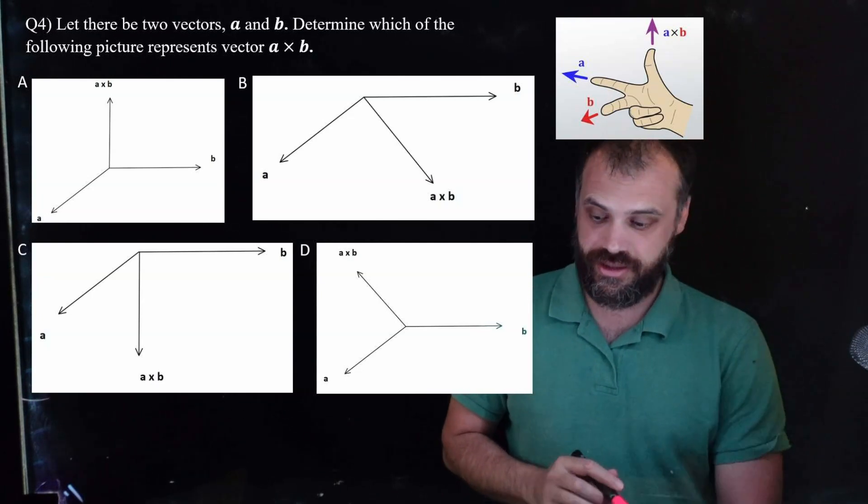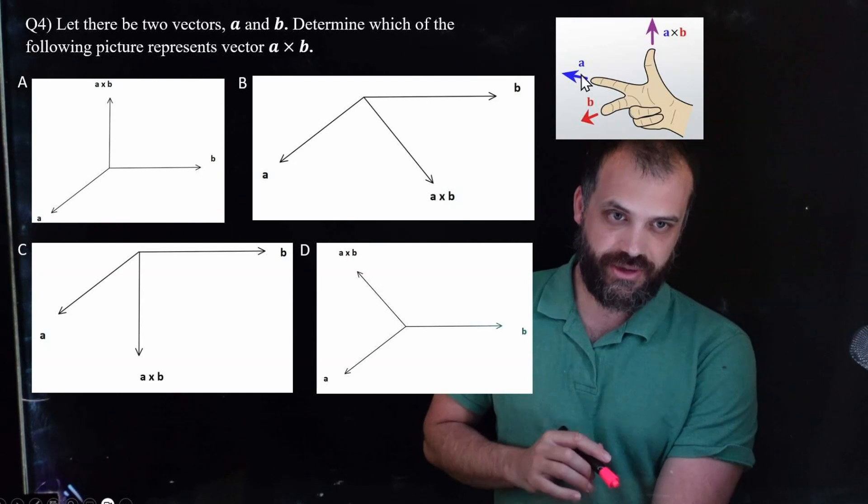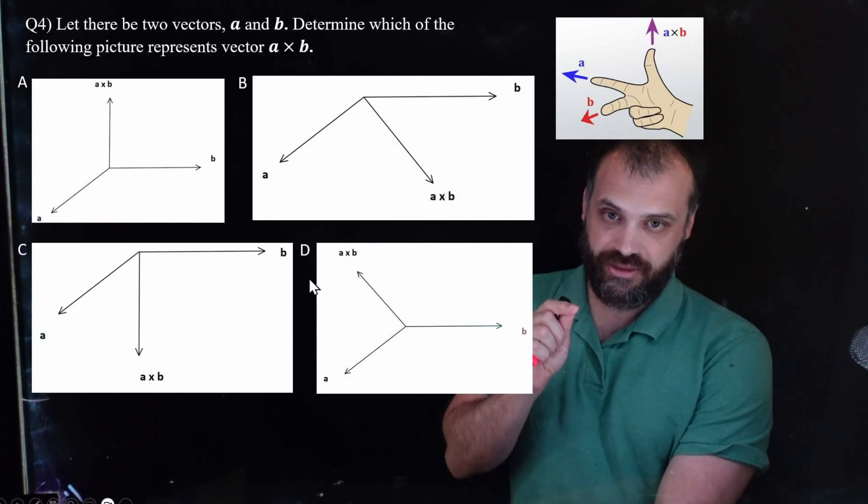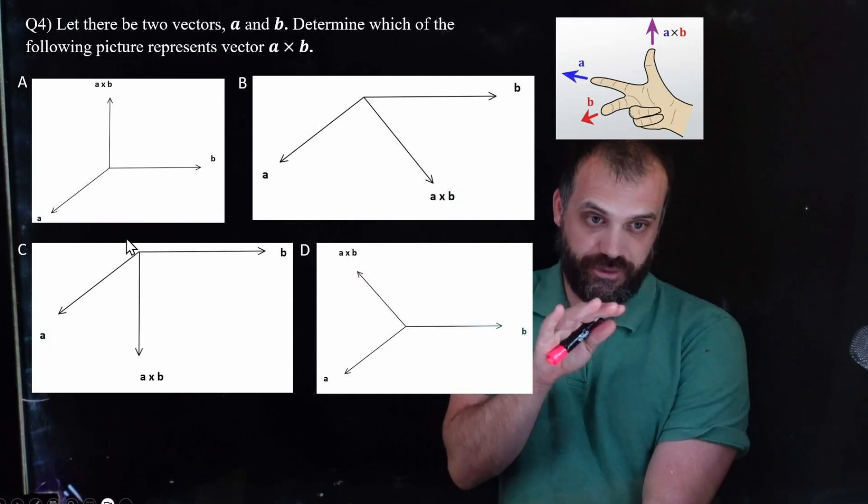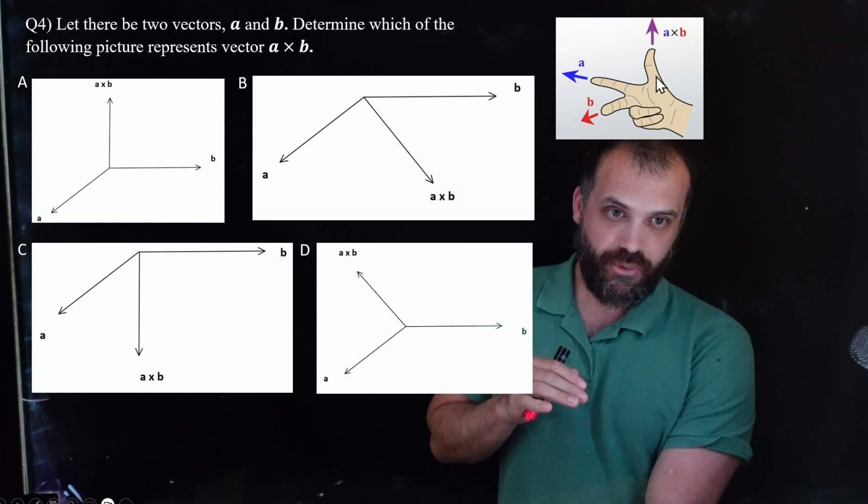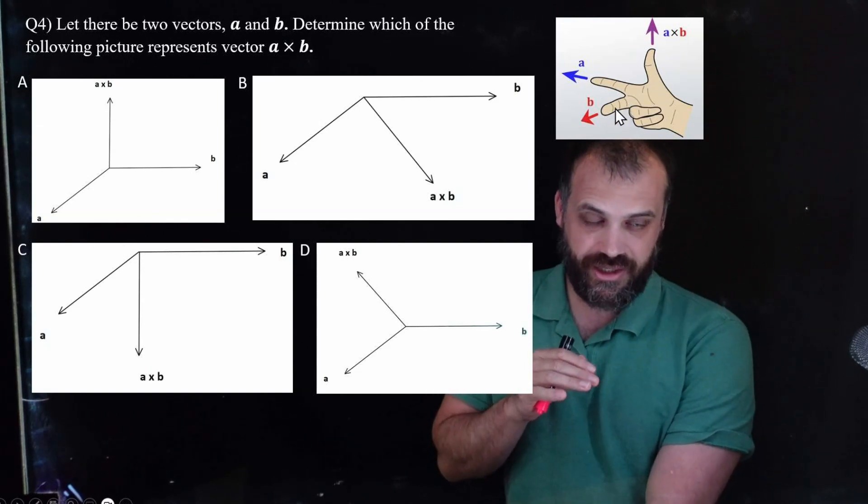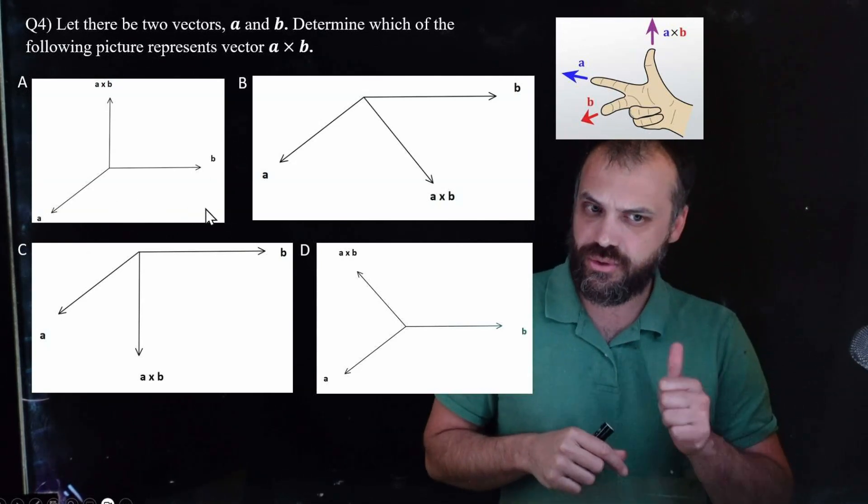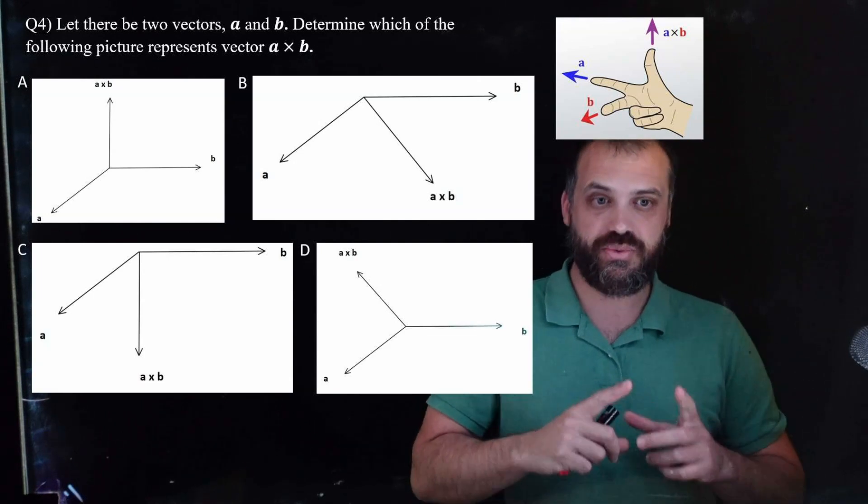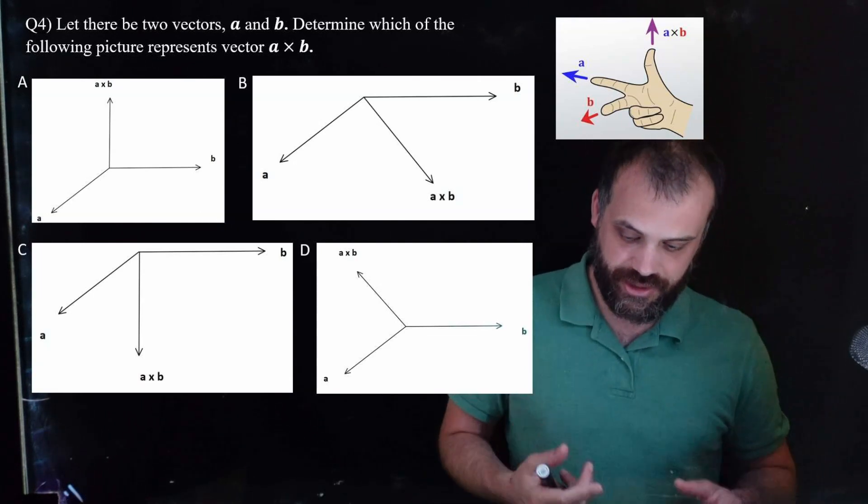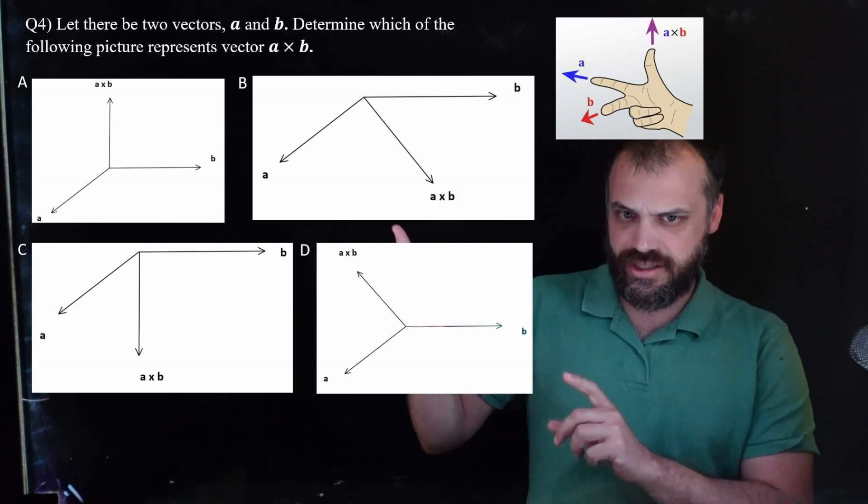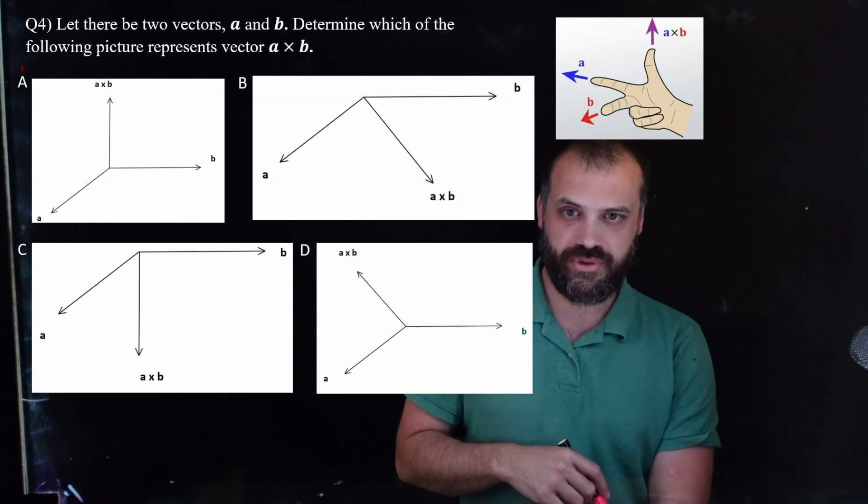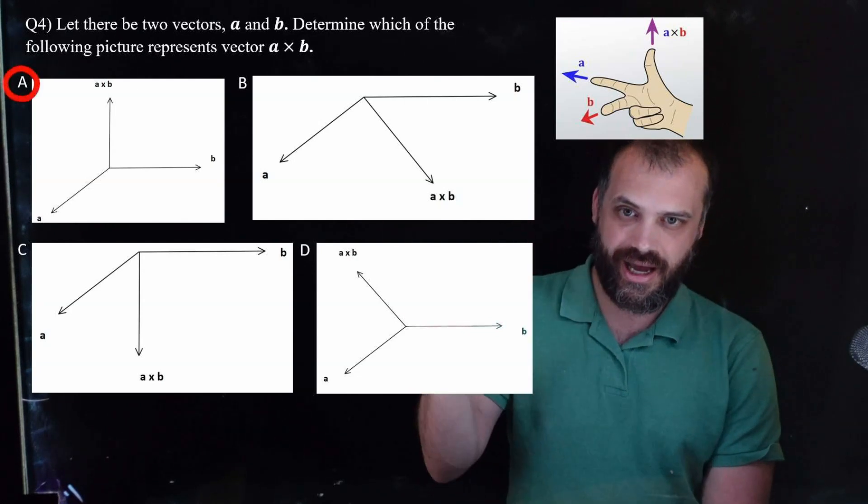Take your right hand, point the index finger at the first vector in your cross product, point your next finger, your middle finger at the second one, so A times B, and wherever your thumb is, is where the answer will be. So, if you can do that, the answer to this is super straightforward, the answer is A.